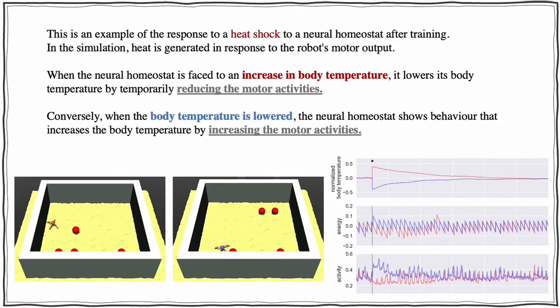Conversely, when the body temperature is lowered, the neural homeostat shows behavior that increases the body temperature by increasing the motor activities.